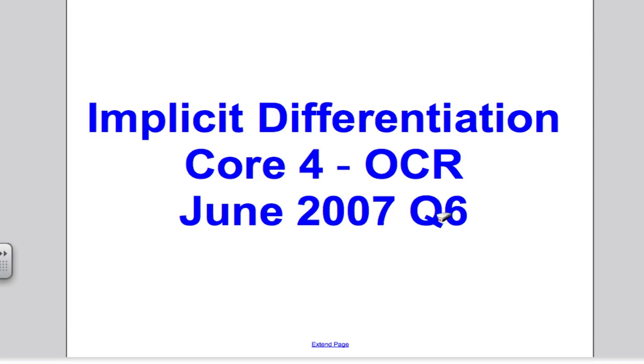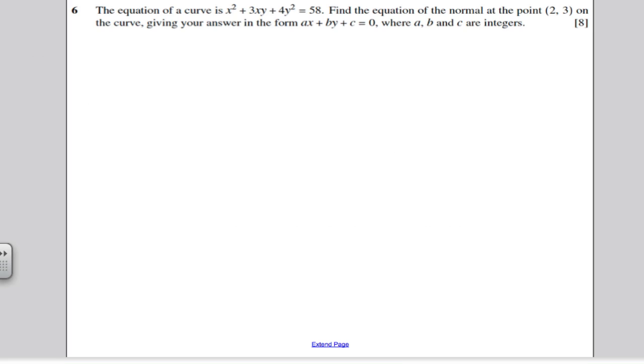Hi there, in the following video I'm going to answer question 6 of the June 2007 Core 4 OCR paper. This is my first series of videos on implicit differentiation. The question tells us we've got this curve and it's defined implicitly. That means x's and y's are together, y's not the subject of this formula. It wants the equation of the normal at the point (2, 3) in a specific form, ax plus by plus c equals 0. We've got 8 marks for this question.